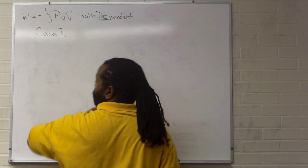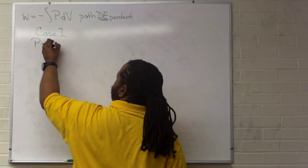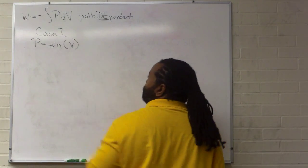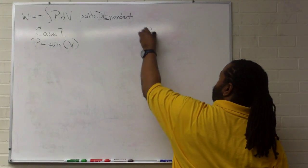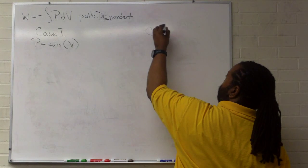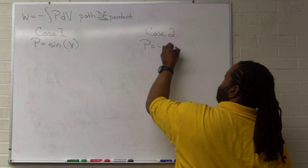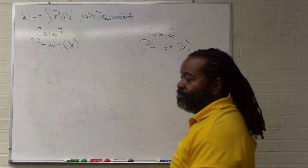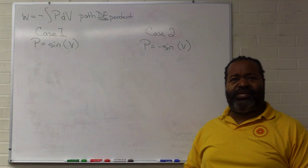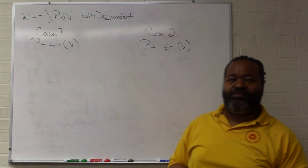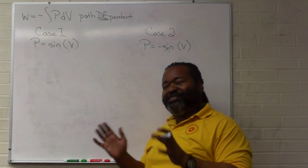In case one we're going to use sine of volume to define our pressure. In case two we're going to use the negative sine of volume. We'll do this over one full cycle of the sine wave, so from volume equals zero to volume equals two pi. It's a made-up case.